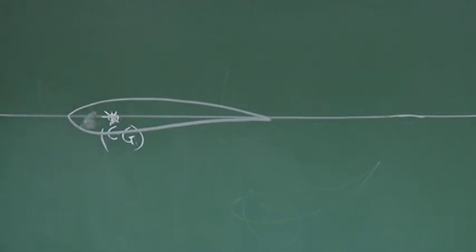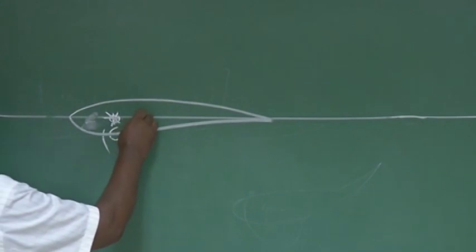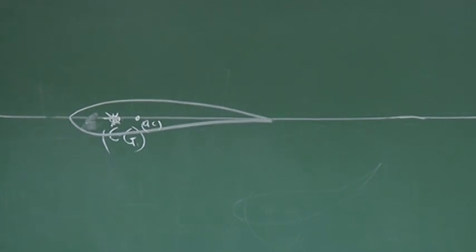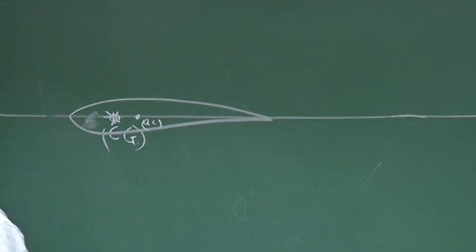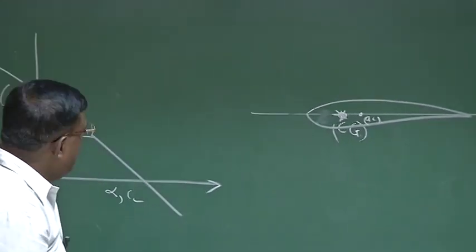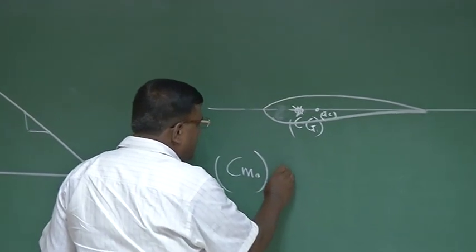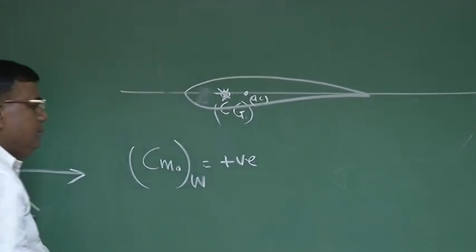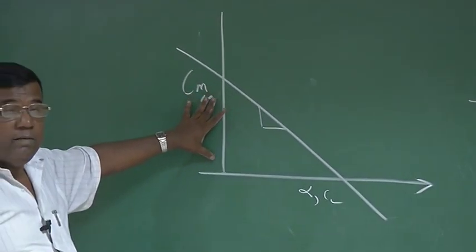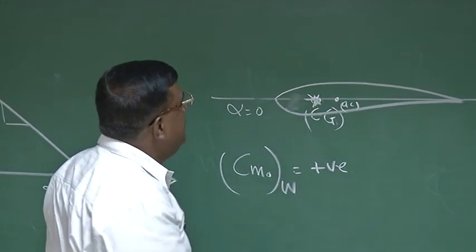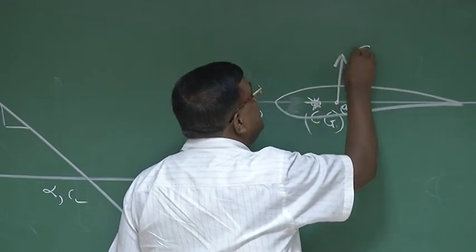To make it statically stable, the AC should be behind the center of gravity — this is the flying wing case. But you know, I can make a cambered airfoil-based wing statically stable, but it cannot be trimmed at a positive angle of attack. Now, what is the problem? I want CM0 because of the wing to be a positive value, so that I get this intercept which is positive. At alpha equal to 0, there will be CL0.